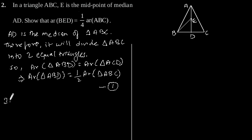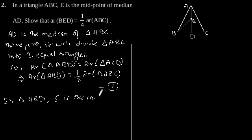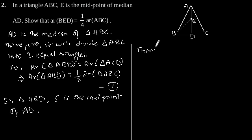Now, in triangle ABD, E is the midpoint of AD. Therefore, BE is the median of triangle ABD.